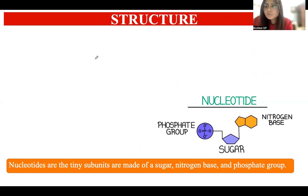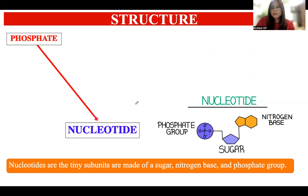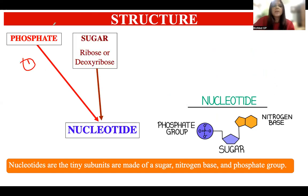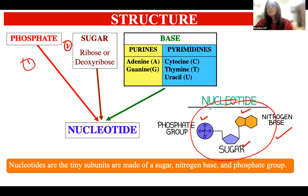Now let's look at the structure of each nucleotide in detail. Nucleic acids — DNA or RNA — are made up of small units called nucleotides, and each nucleotide has three components. The first is a phosphate molecule, which carries a negative charge. The second is a sugar molecule. The third is a nitrogenous base. These three components collectively form a nucleotide — the tiny subunit of nucleic acids — as shown in the figure where a nitrogenous base is attached to a sugar and a phosphate group.